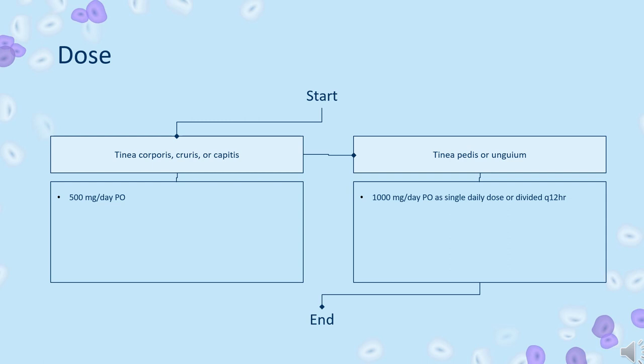Ultramicrosize: Tinea corporis, cruris, or capitis — 375 mg per day, PO. Tinea pedis or unguium — 250 mg PO every 8 hours.